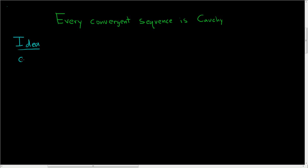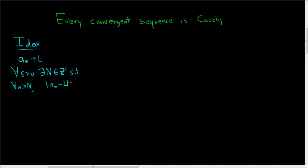Here's the idea. Let's say we have a sequence and it converges to L. So what does this mean? This means that for all epsilon greater than 0, we can find a positive integer, which we can call capital N, such that for all little n bigger than capital N, the distance between a_n and L can be made small — as small as we like, smaller than epsilon. And I say as small as we like because this holds for all epsilon.